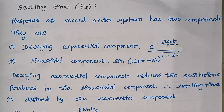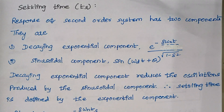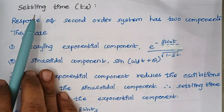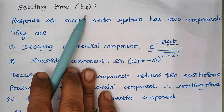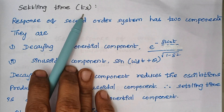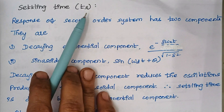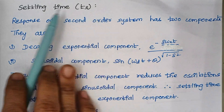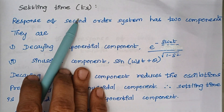Hello viewers, I am Kausalya. Today we are going to see another derivation in time response analysis. The topic is settling time. So what is meant by settling time? The output of a system becomes stable or steady at a particular time, and that respective time is known as settling time.